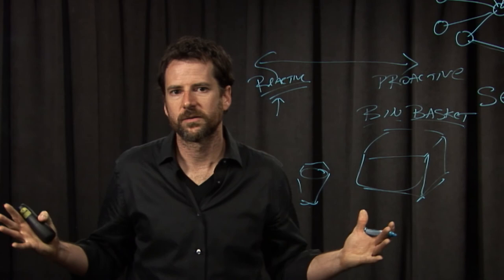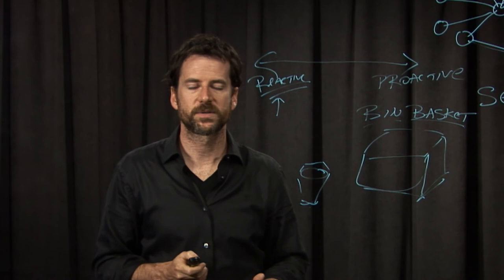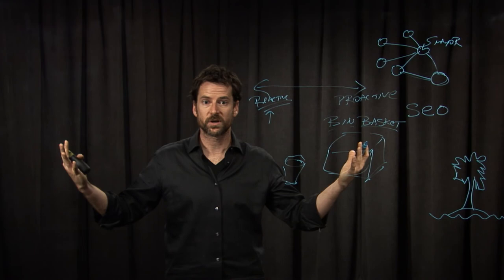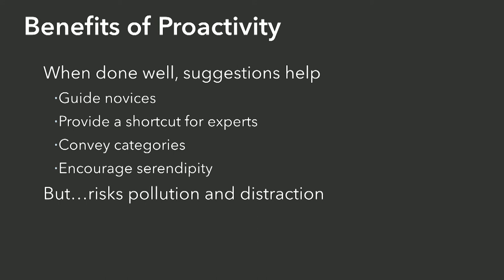People just struggle with search in general, even as pervasive as it is. They don't know the search space, they have difficulty with keyword selection, and it's hard to know the difference between terms. What we saw, in part to mitigate the difficulty of knowing what to search for, is that proactivity — when done well — can really help here. It can guide novices, speed experts' actions, convey categories as we saw in several screenshot examples, and encourage serendipity — like in Google Scholar — for things we wouldn't have thought to check out.